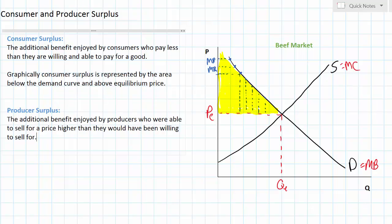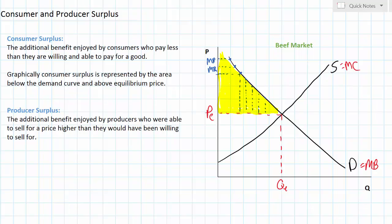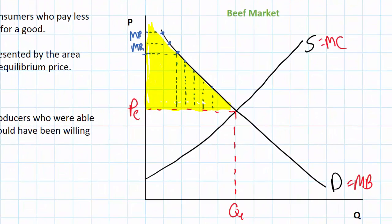In this simple supply and demand diagram we're not going to be talking about profit since we don't have cost and revenue curves to calculate profit. Assume that the market for beef is made up of hundreds, maybe even thousands, of cattle farmers all with varying degrees of costs. Some cattle farmers are more productive and efficient than others, therefore they can raise cows and produce beef at a much lower marginal cost. The most efficient and low-cost cattle farmers are represented by the lower left-hand corner of the supply curve — these are farmers who would have been willing and able to supply beef at a much lower price than they were actually able to sell it for.